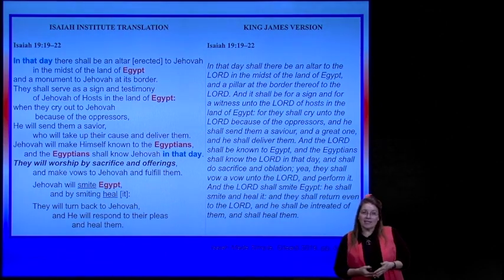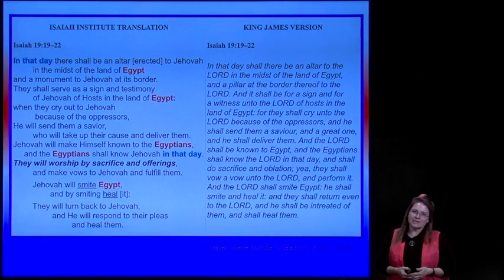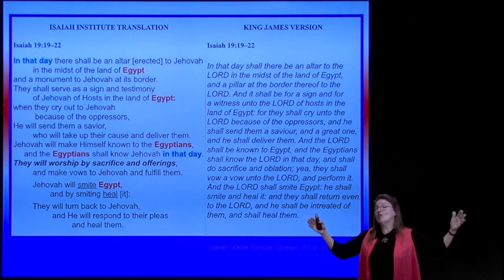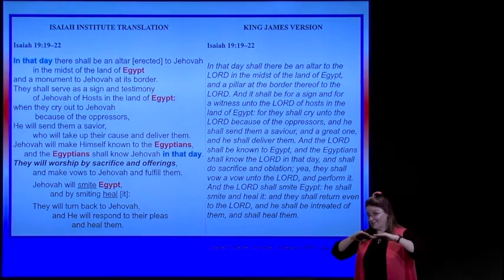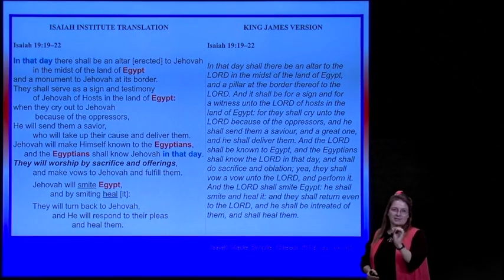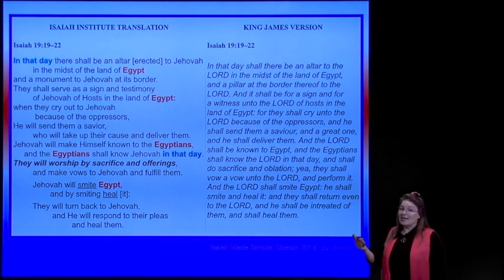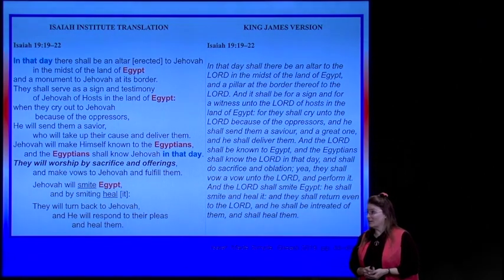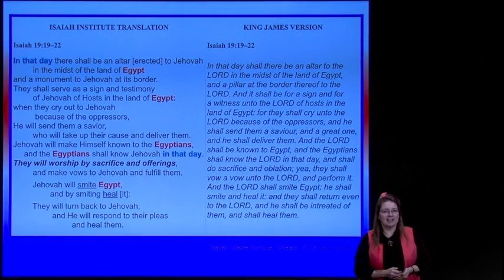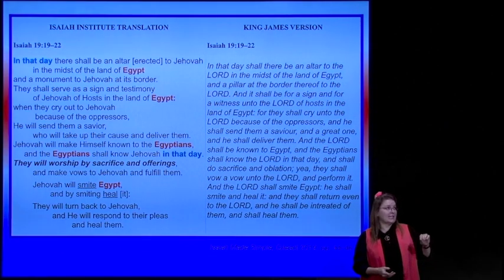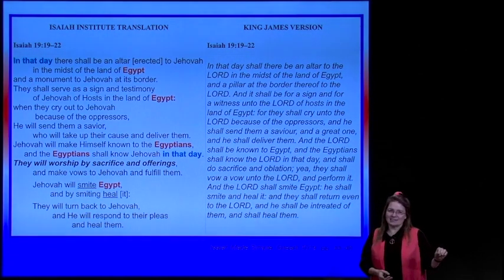Isaiah 19: 'In that day there shall be an altar erected to Jehovah in the midst of the land of Egypt.' You guys ever seen where Jackson County is? In the middle of North America—right in the center, in the midst of the land of Egypt—and a monument to Jehovah at its border. 'They shall serve as a sign and a testimony of Jehovah of hosts in the land of Egypt. When they cry out to Jehovah because of the oppressors, he will send them a Savior who will take up their cause and deliver them.'